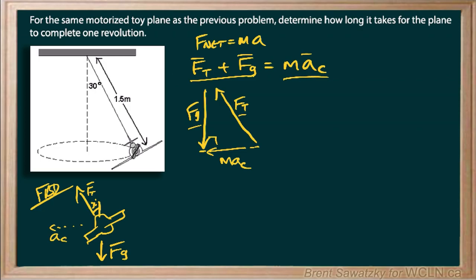All right, and so we're interested in the period here, which means that we want to be looking at involving AC in our equation. So I think what we can do here is recognizing that this is our five newtons, let's solve for the MAC. So MAC, just using trig, is FT sine 30, so it's opposite of our 30 degrees. All right, so rearranging, AC equals FT sine 30 over M.